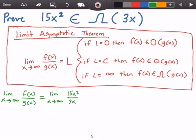We can do 15 divided by 3. So this becomes the limit as x approaches infinity of 5x squared divided by x. And then we can do 5x squared divided by x to get 5x. So this becomes the limit as x approaches infinity of 5x, and this equals infinity, which is our limit value L.